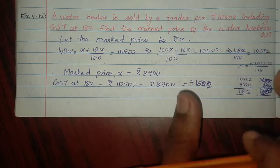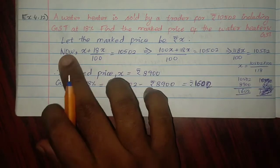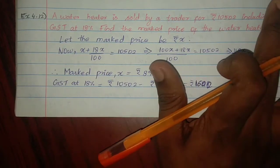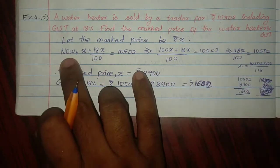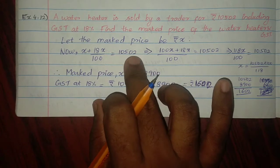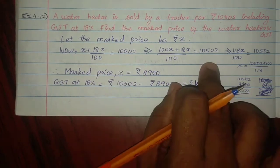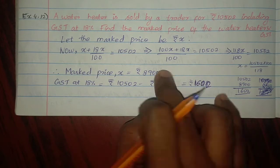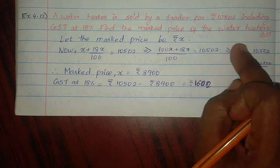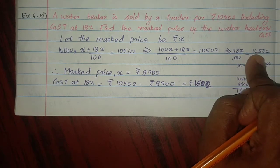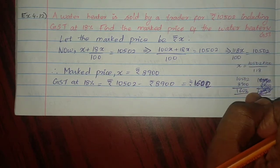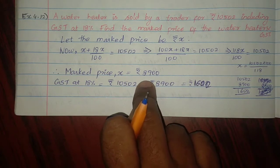Let the market price be X. Then X plus 18% of X equals Rs. 10,500. So X plus 18X by 100 equals 10,500, which gives 100X plus 18X divided by 100 equals 10,500. Therefore 118X divided by 100 equals 10,500. Solving, X equals Rs. 8,900. So the market price is Rs. 8,900.